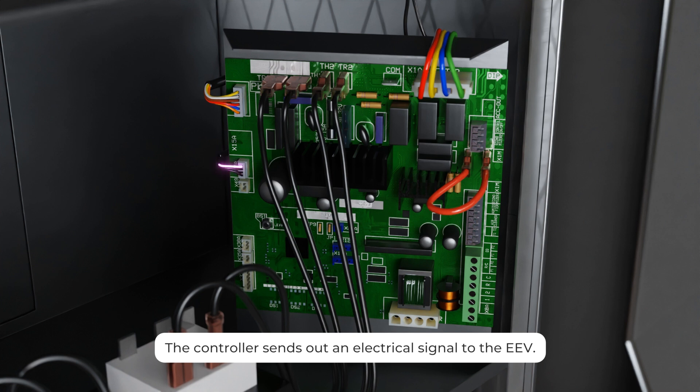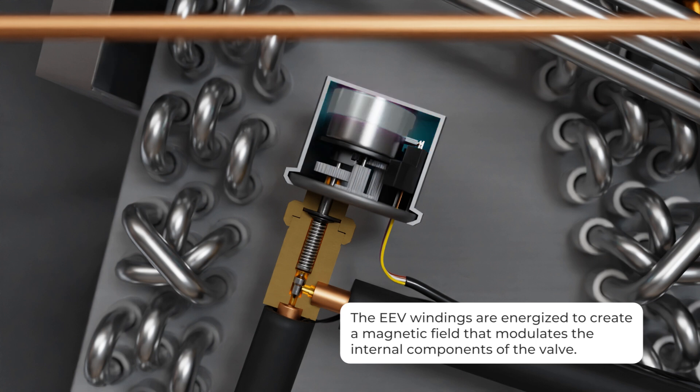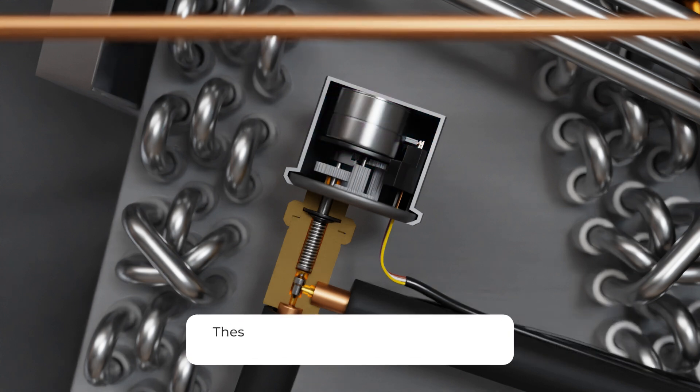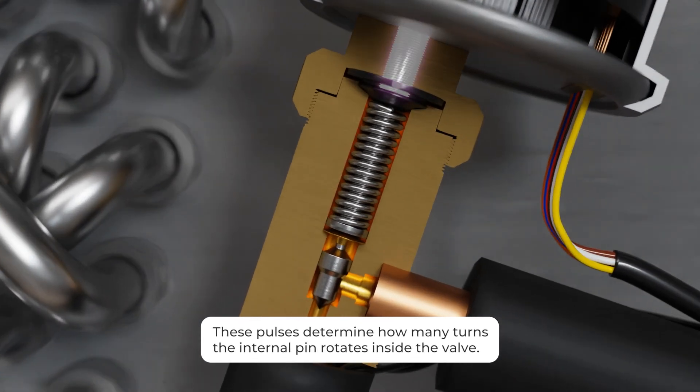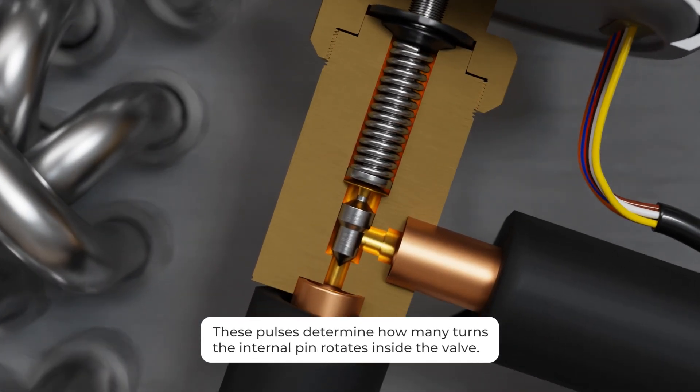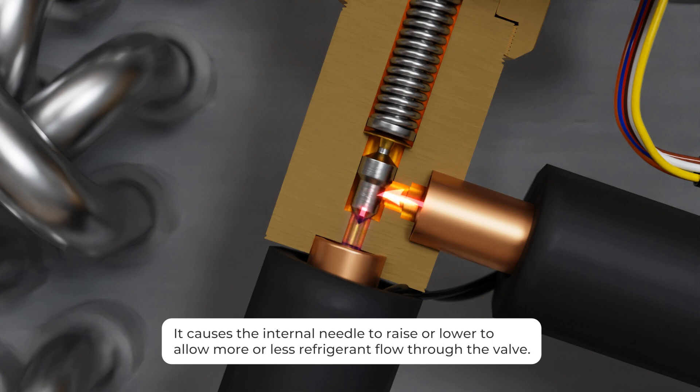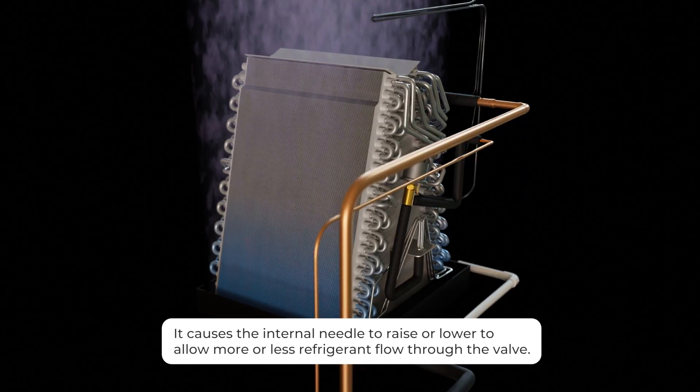The controller sends out an electrical signal to the EEV energizing windings to create a magnetic field that modulates the internal components of the valve. These signals are called pulses. These pulses determine how many turns the internal pin rotates inside the valve causing the internal needle to raise or lower to allow more or less refrigerant flow through the valve.